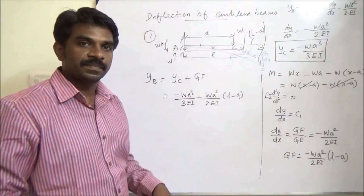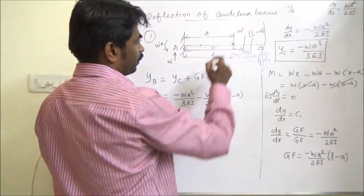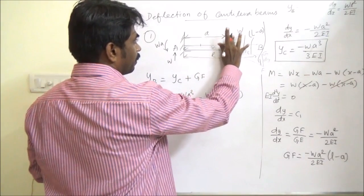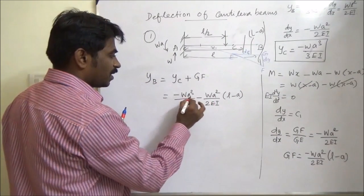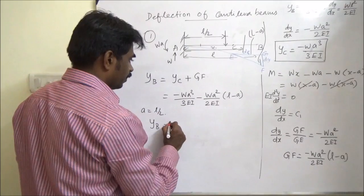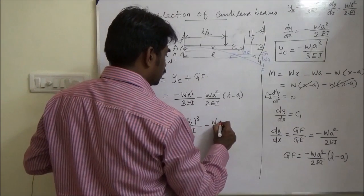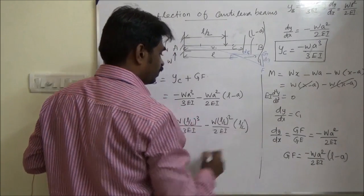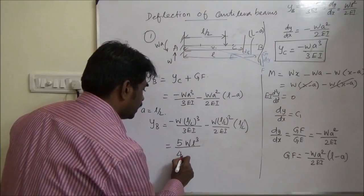Now if W is acting at the midpoint, a = L/2. Substituting: y_B = W(L/2)³/3EI + W(L/2)²/2EI × (L/2), which gives y_B = 5WL³/48EI.